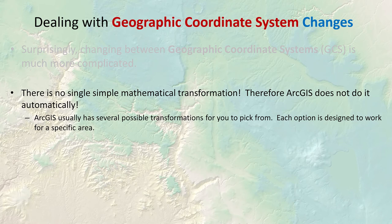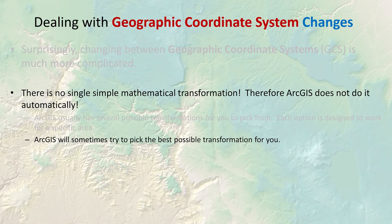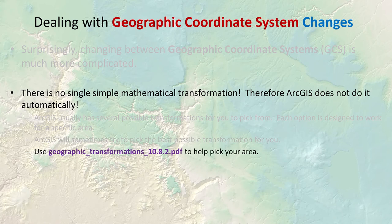ArcGIS has many possible transformations to choose from, and each option is designed to work better in a particular area. For example, to convert between NAD 83 and WGS-84, there might be a dozen different methods. ArcGIS needs you to tell it which one to pick. As of ArcGIS 10.1, ArcGIS tries to help by sorting the list of options by appropriateness to your location, though this is easy to fool. ESRI used to provide a geographic transformations PDF to help you choose.